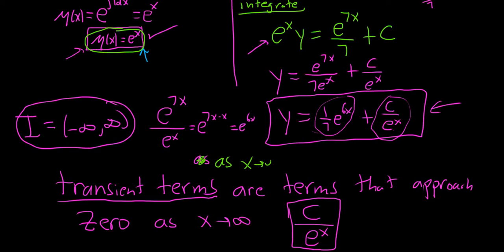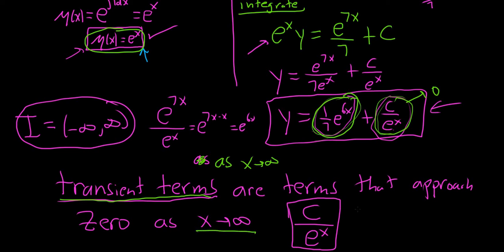From an intuitive perspective, as x approaches infinity all of your solutions approach (1/7)e to the 6x, because the transient term approaches 0. So it's kind of interesting — all solutions collapse toward that one curve. Transient terms are simply terms that go to 0 as x goes to infinity. Sometimes there are no transient terms, and sometimes they're a little harder to identify. I hope this video has been helpful.